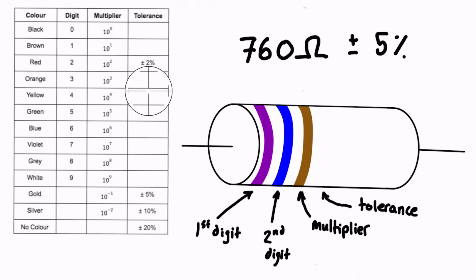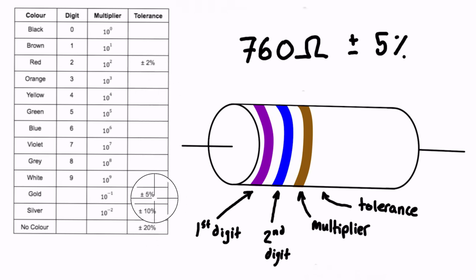Our tolerance is plus or minus 5%, so we look in the table for plus or minus 5% — that is going to be gold. We can draw that in as our fourth color band, and now we have a fully labeled resistor based on the actual resistance value and tolerance we were given.